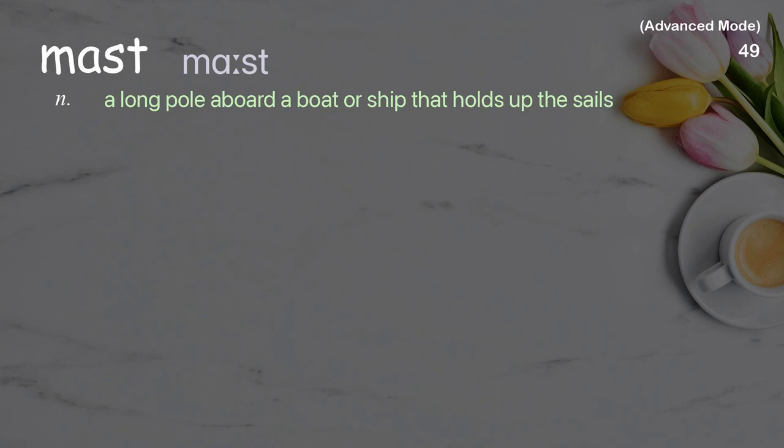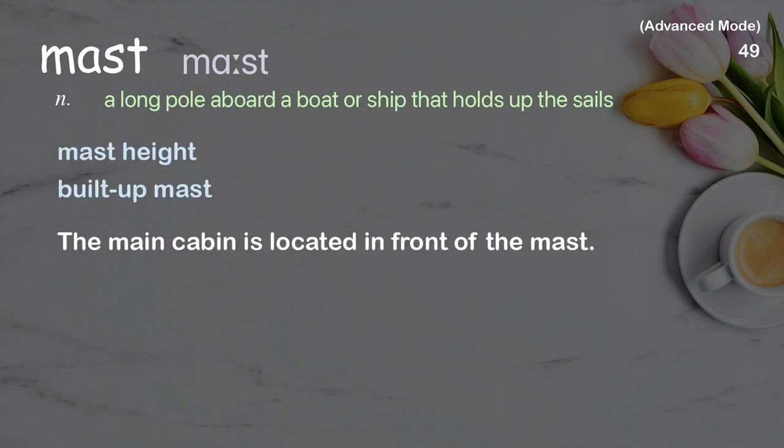Mast: A long pole aboard a boat or ship that holds up the sails. Examples: mast height, built-up mast. The main cabin is located in front of the mast.